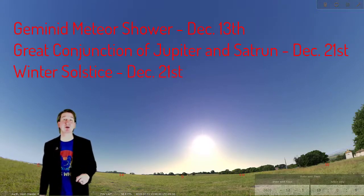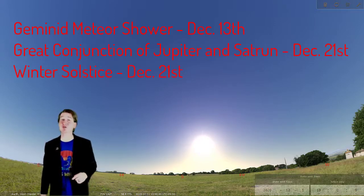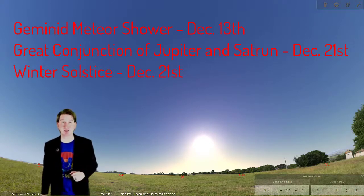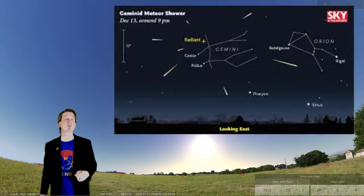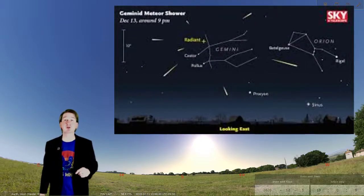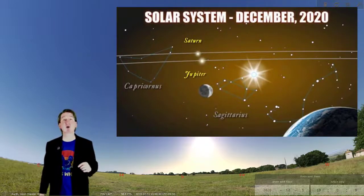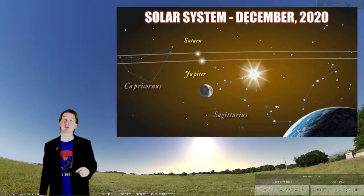December hosts the shortest day of the year, with the winter solstice on the 21st. The shortest day of the year also means the longest night, and it's a good thing too, because there's two nighttime events that you will want plenty of time to catch. The best meteor shower of the year, the Geminids, will show up mid-month. Then, on the winter solstice, Jupiter and Saturn will have their greatest conjunction since 1623.